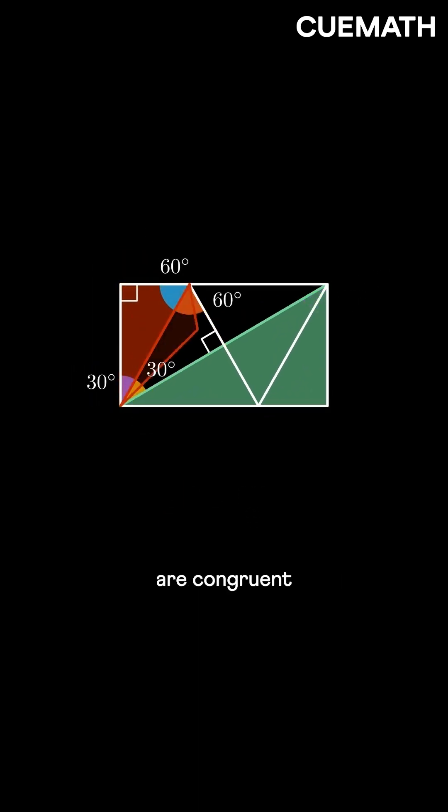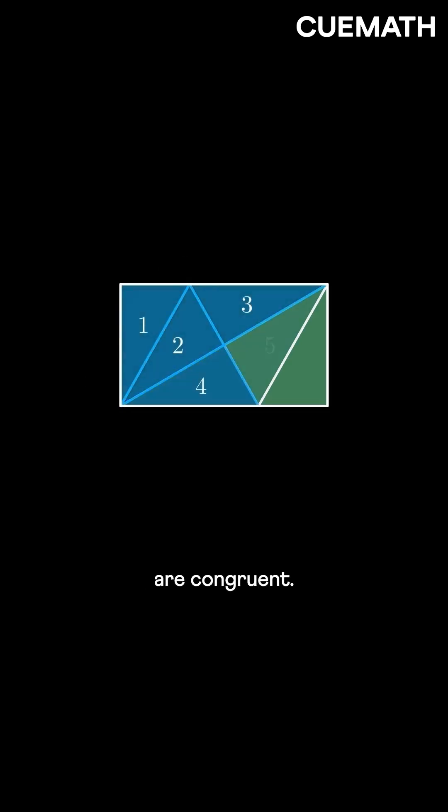Now these two triangles are congruent since they have equal angles and common side. Similarly, all these triangles are congruent.